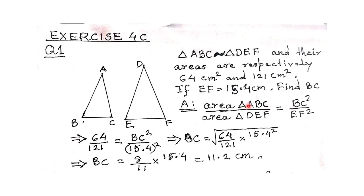Area of triangle ABC upon area of triangle DEF is equal to BC² upon EF². Area of ABC is 64, area of DEF is 121, and EF is 15.4 cm. So: 64/121 = BC²/15.4². Just put in the values and cross multiply.